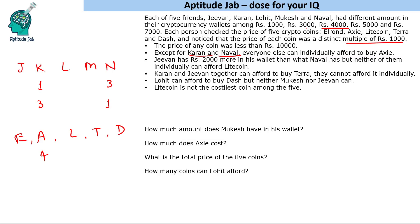G1 has 2000 more in his wallet than what Nawal has. If we put Nawal at 1000, G1 would also be 3000, but that is not possible since amounts are distinct — so this case gets eliminated. Therefore Nawal has 3000 and G1 will have 5000. So 1000, 3000, and 5000 are assigned; we are left with 4000 and 7000.